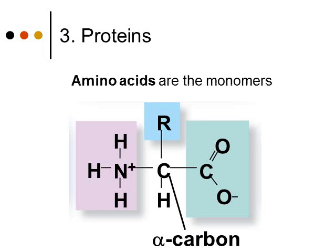There's a protein called hemoglobin that transports oxygen to all the cells in our body. The monomer, or those building blocks of proteins, are called amino acids.